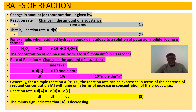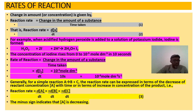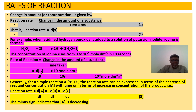Generally, for a simple reaction A → B + C, or A + B → C + D, the reaction rate can be expressed in terms of the decrease of reactant concentration with time or increase in product concentration. At the beginning of the reaction, reactant concentration is at maximum and product concentration is zero.